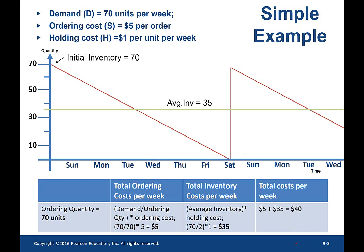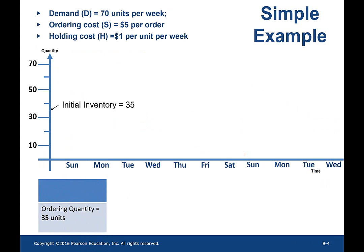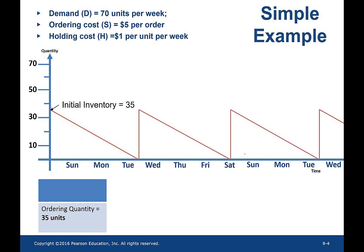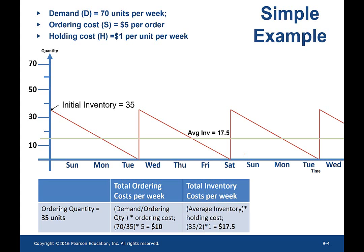Let's see what happens if we cut the ordering quantity by half — so the ordering quantity is 35 units. The buyer starts with an initial inventory of 35, and somewhere around Wednesday afternoon the inventory hits zero. The buyer places an order of 35, receives it immediately, and by end of Saturday inventory hits zero again, placing another order of 35. The buyer orders two times a week, so 2 times 5 is $10. The average inventory is half of 35, which is 17.5, giving a total inventory cost of $17.5 per week. Adding these two costs leads to $27.5 — by cutting the ordering quantity by half, the total cost is reducing.